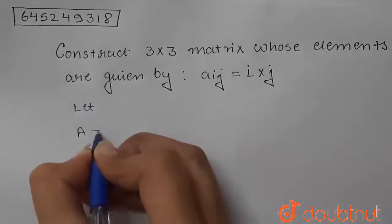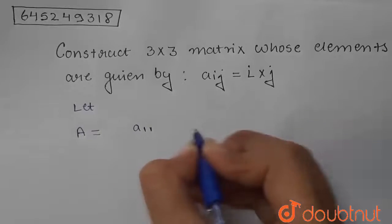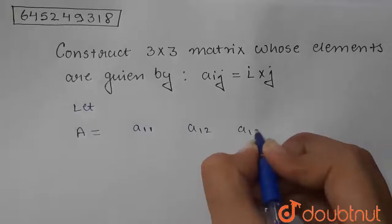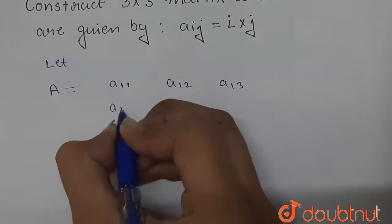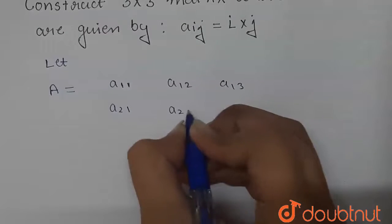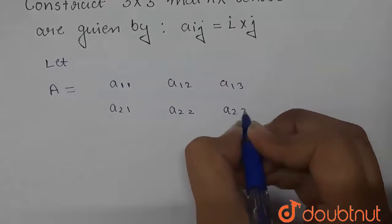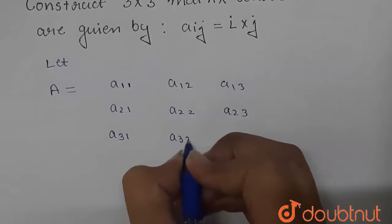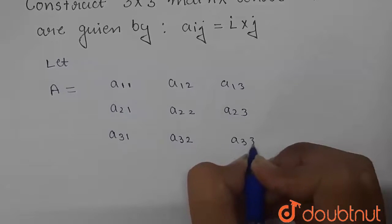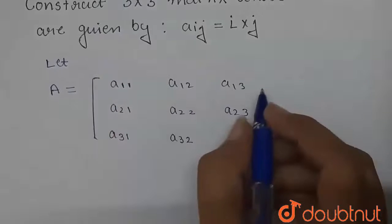So let that matrix be equal to A and its elements will be written like this: a11, a12, a13. And here, its next element will be written as a21, then a22, then a23. Similarly, this will be written as a31, a32, and then a33. So this will be our 3x3 matrix.